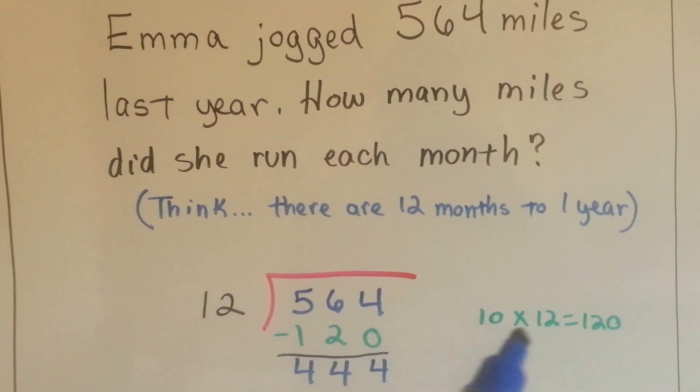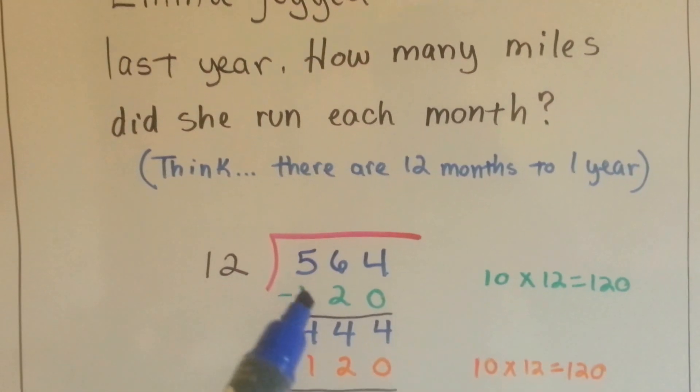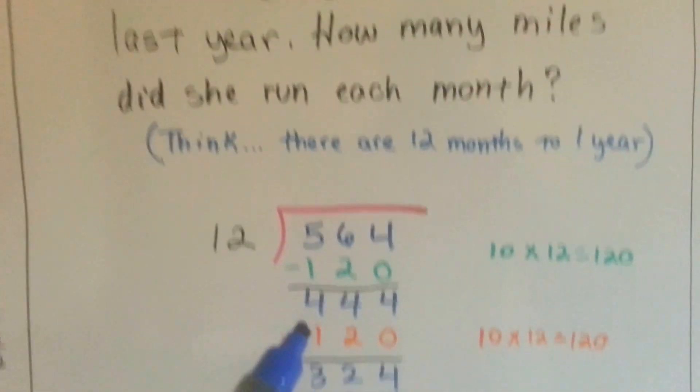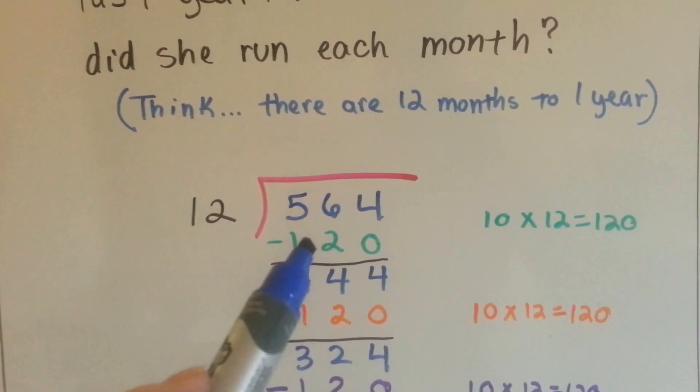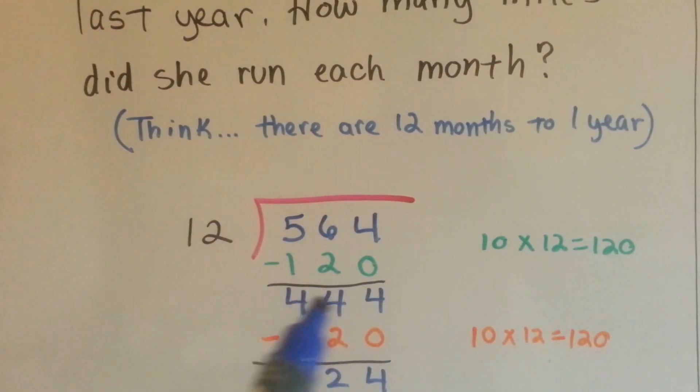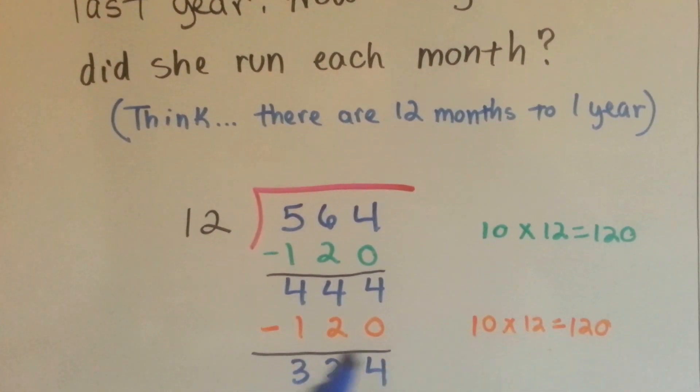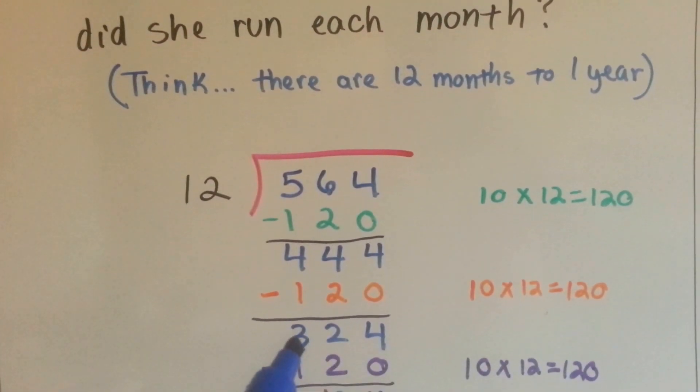I know that 12 times 10 is 120, so I can take that away from it. Because remember, we're using repeated subtraction. So we took that away, then we were left with 444. So I know I can take another 120 away, another 10 times 12. That brings us to 324.